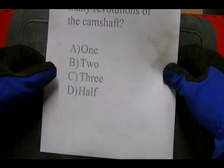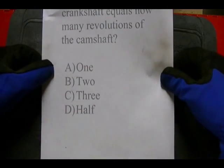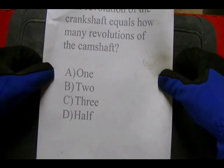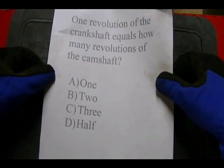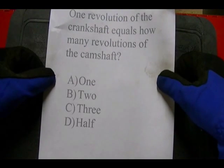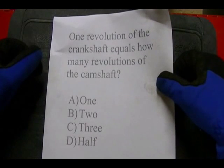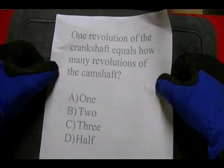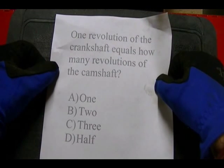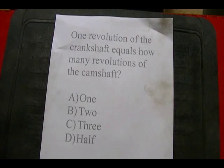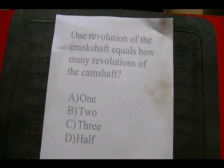The correct answer is D, half. Whenever you're talking about the rotational relationship between the crankshaft and camshaft — whether it's a small engine on a lawnmower or your car engine — you're always going to have a two-to-one ratio, meaning the crankshaft rotates at twice the speed of the camshaft. That's true whether the crankshaft drives the camshaft using gears, belt, or chain drive.